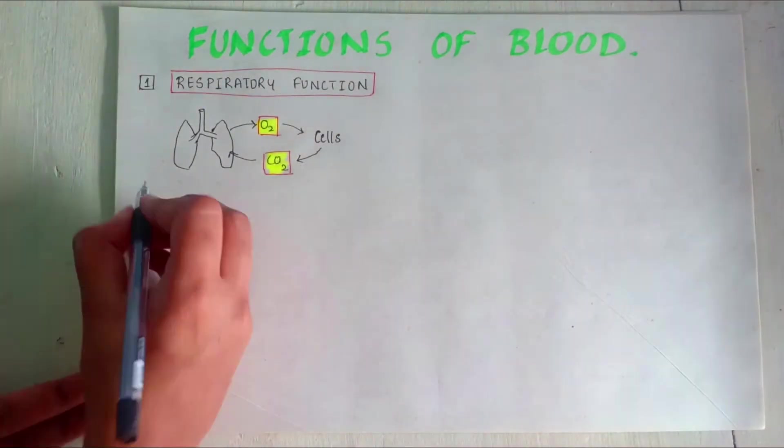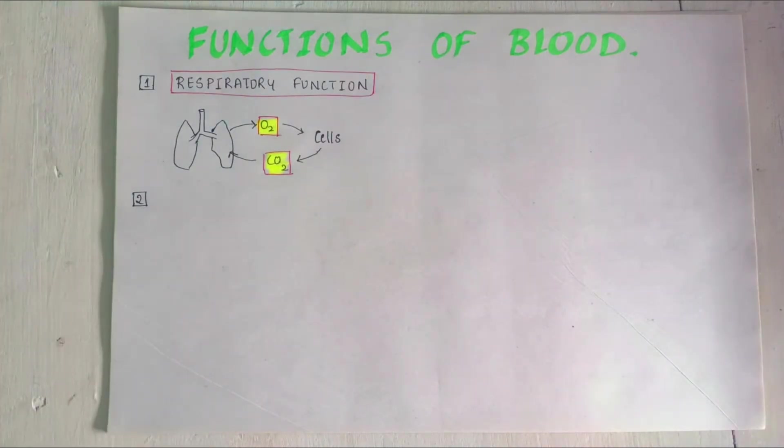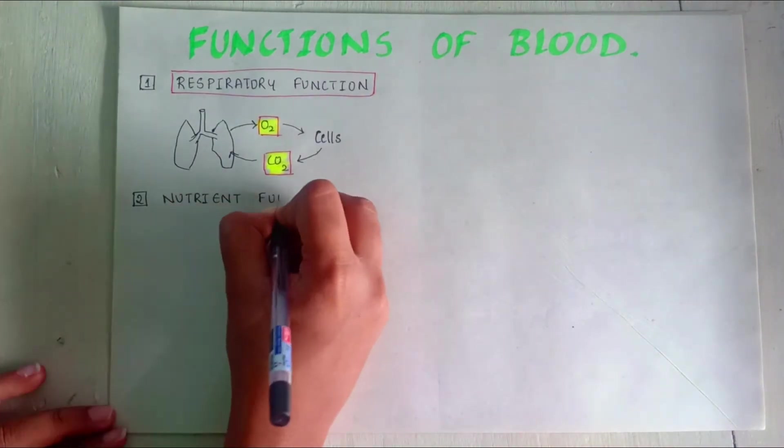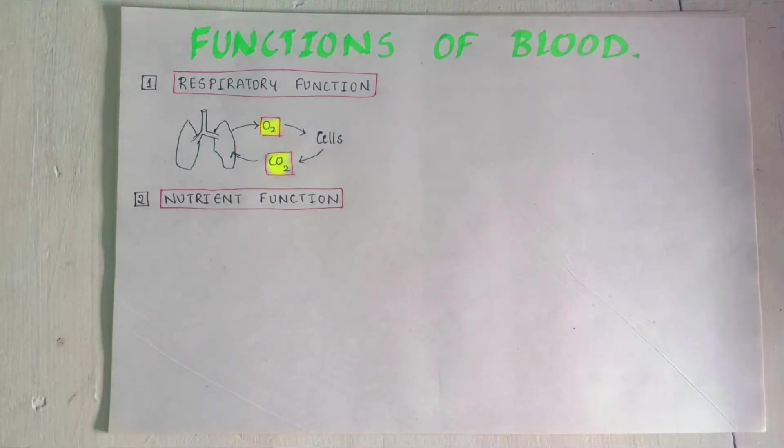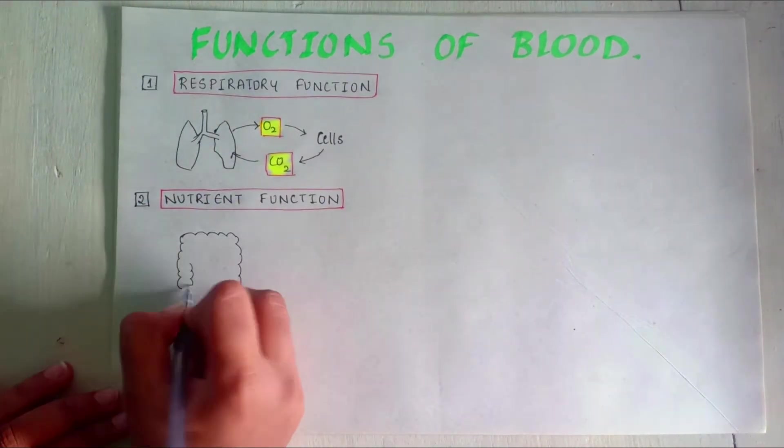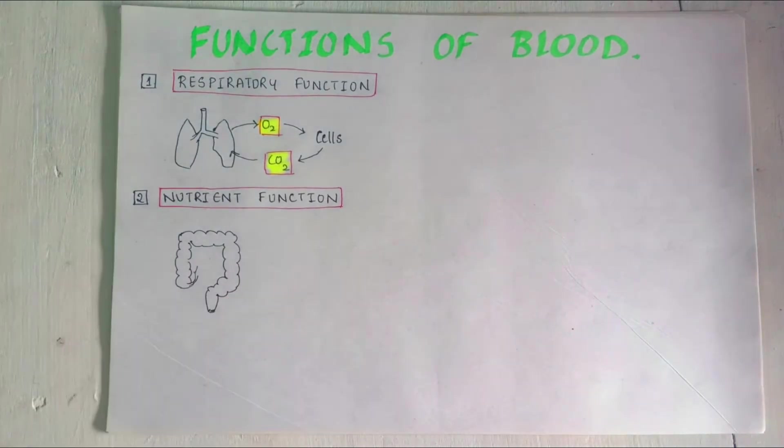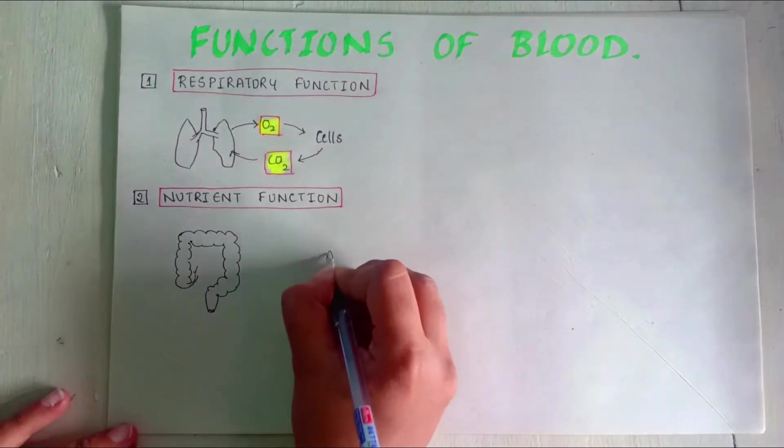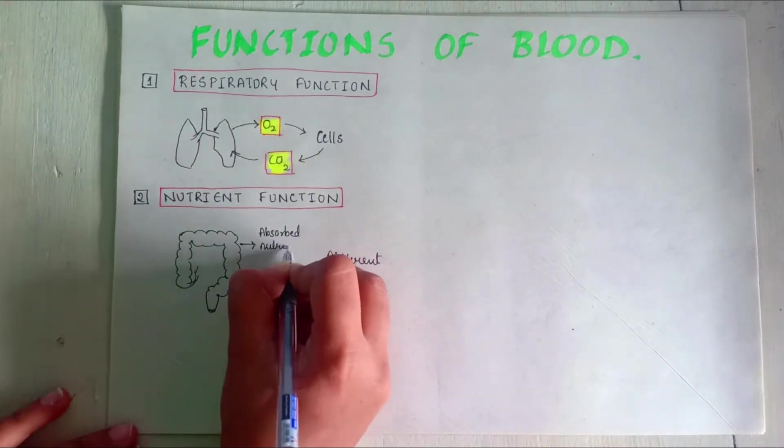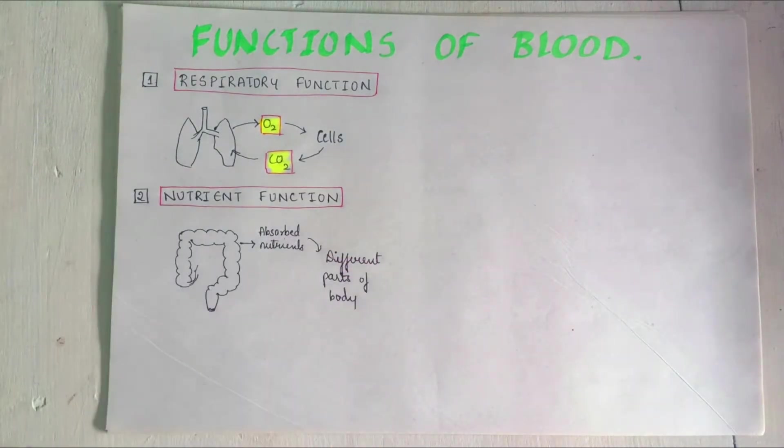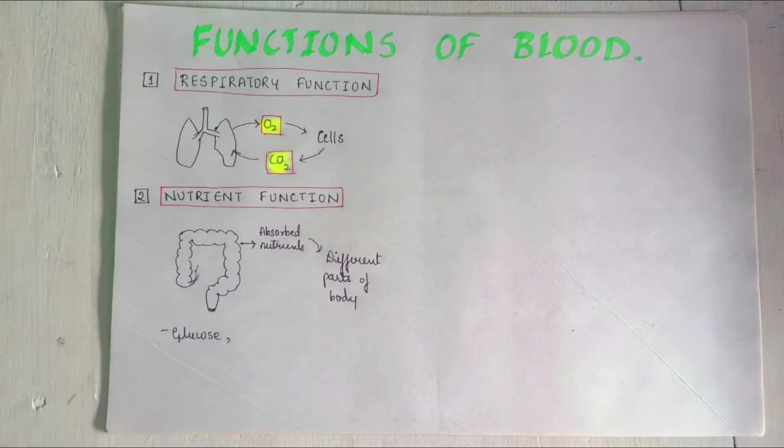Second, the nutritive function. Nutritive substances like glucose, amino acids, lipids and vitamins which are derived from the digested food are absorbed from gastrointestinal tract and carried by blood to different parts of the body for growth and production of energy.